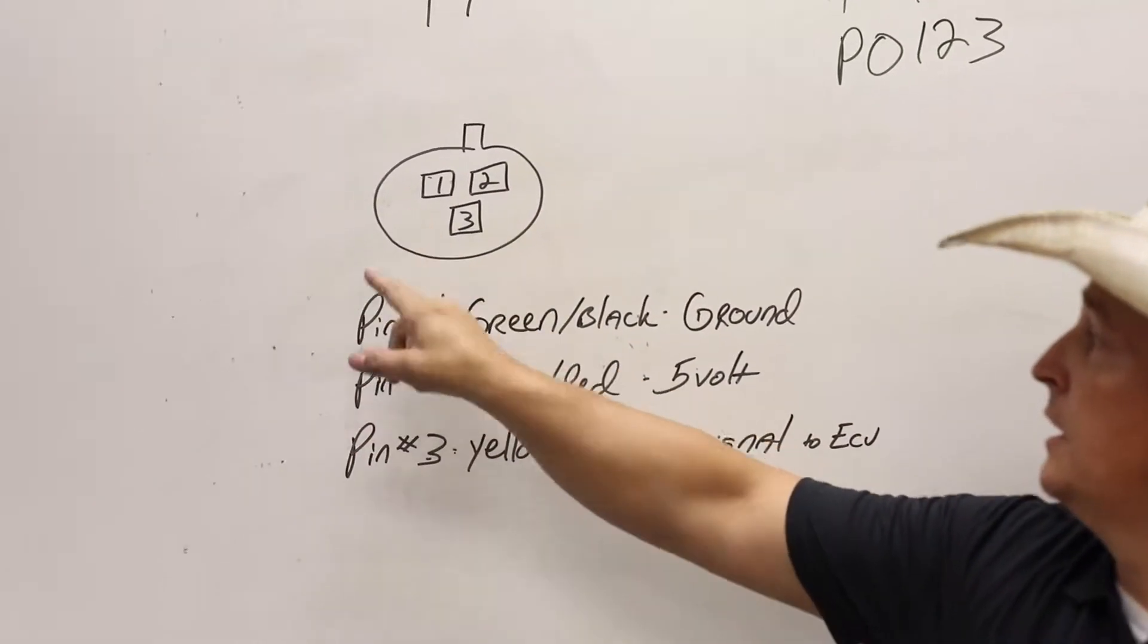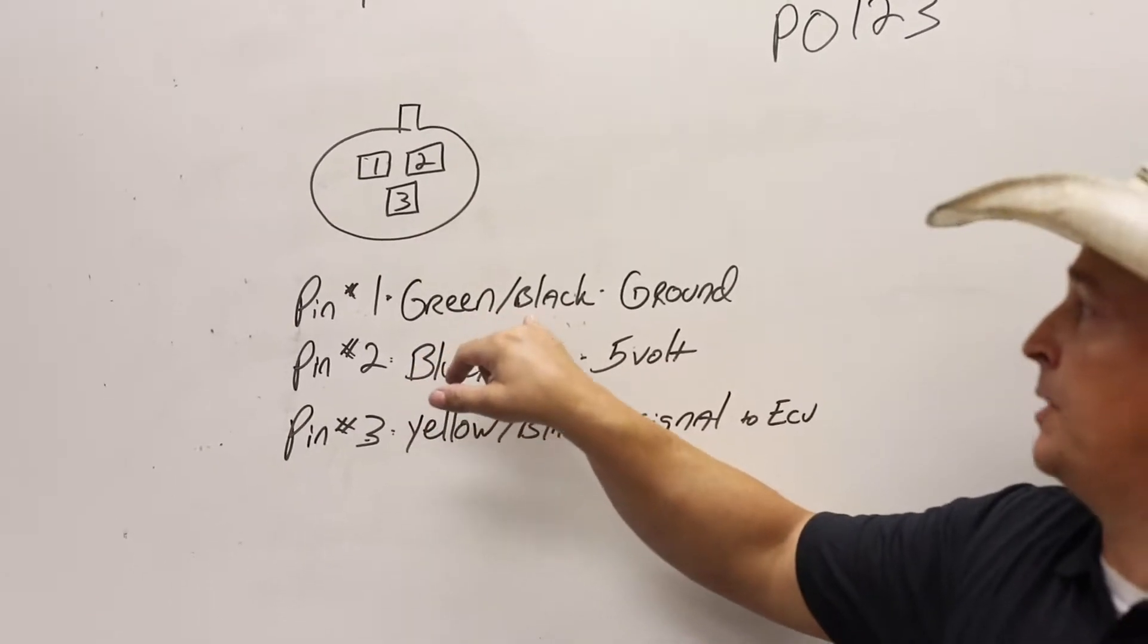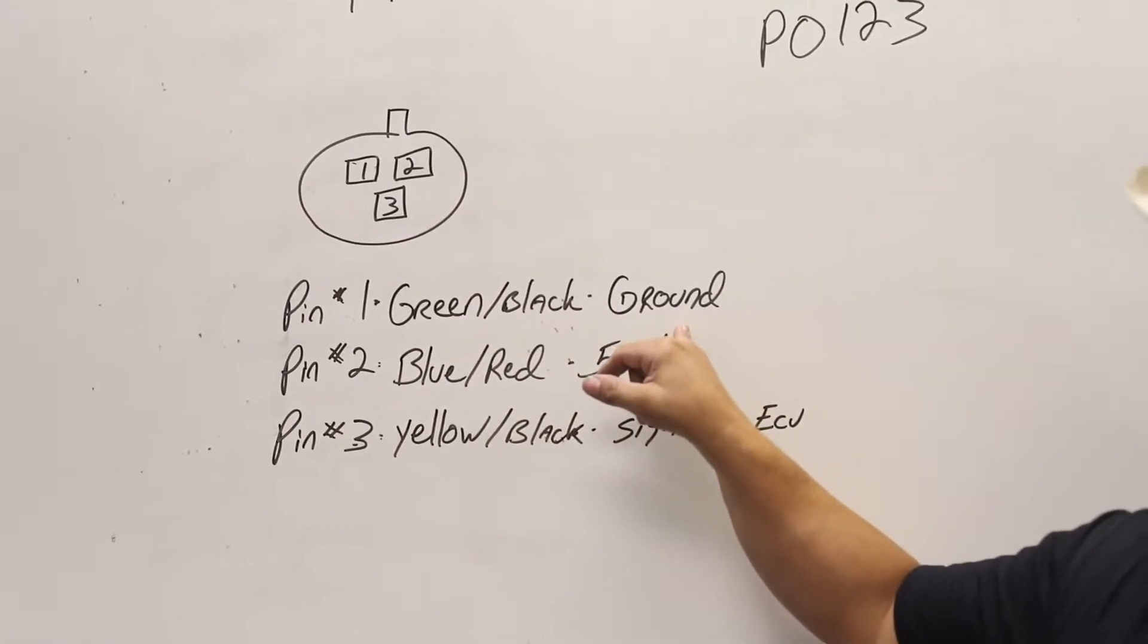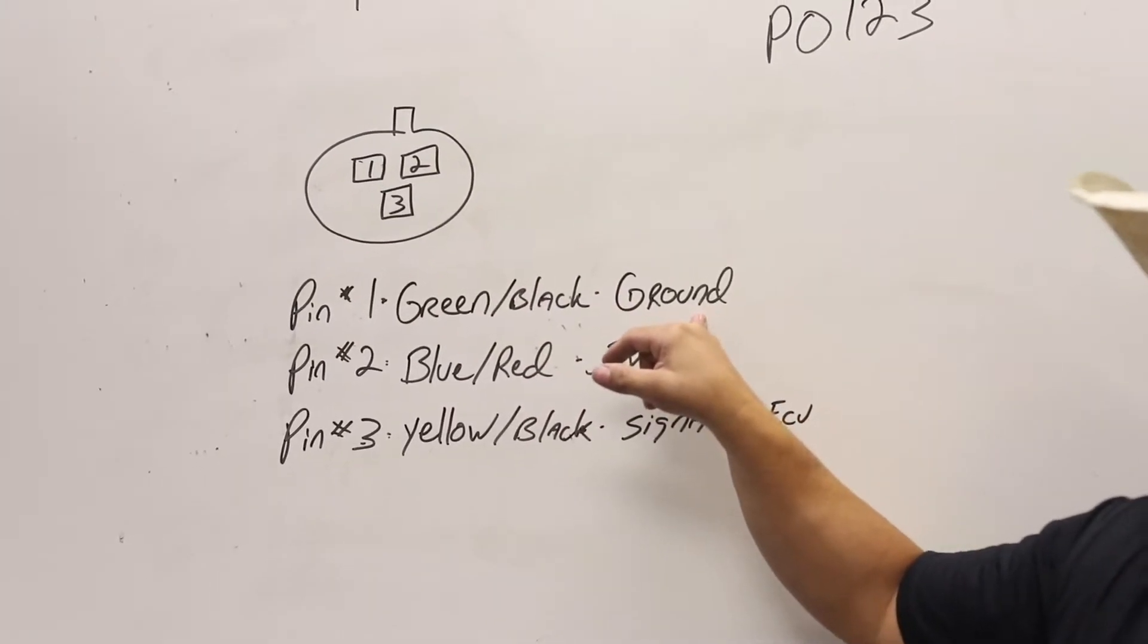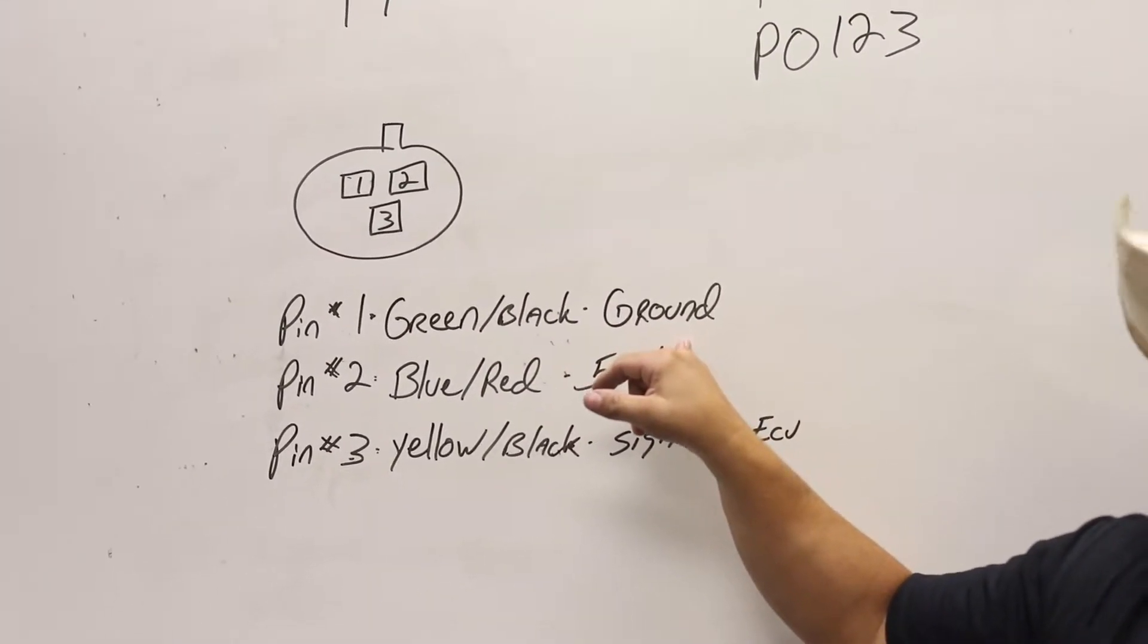Your pin one is going to be a green wire with a black stripe. That is your ground. That's going to come from the ECU. This sensor requires a ground. If you do not have a ground this will not work.